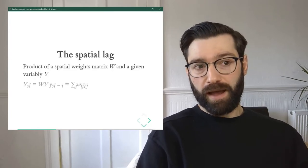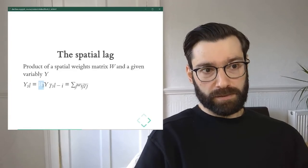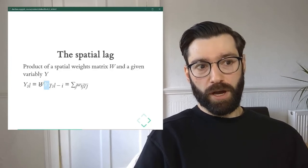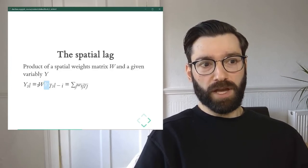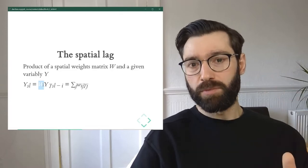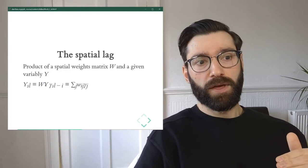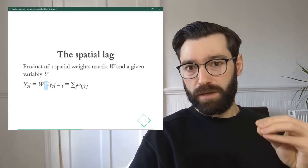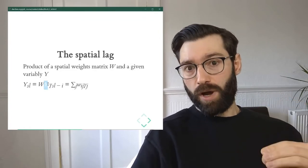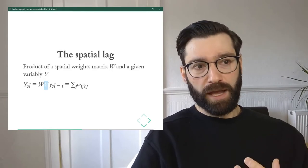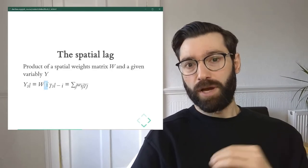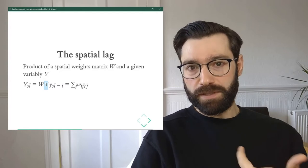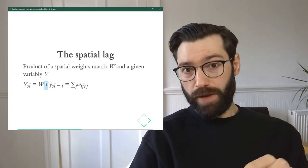We can express the spatial lag as the product of a matrix W and a vector y. W we know is of dimension n by n. So we have one row for every observation, one column for every observation. Then y is a vector that expresses measurements for every observation, so it's n by 1. If you remember a little bit of matrix notation, n by n times n by 1 gives you as a result, well first it's possible to multiply and second as a result gives you another vector of n by 1.